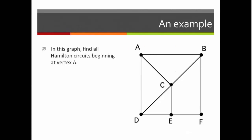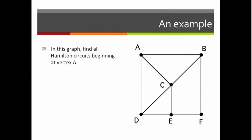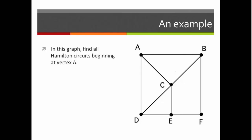Now let's look at an example. Here I give you a graph with six vertices. And let's see if we can find a Hamilton circuit in this graph. Let's say we'll begin at vertex A.